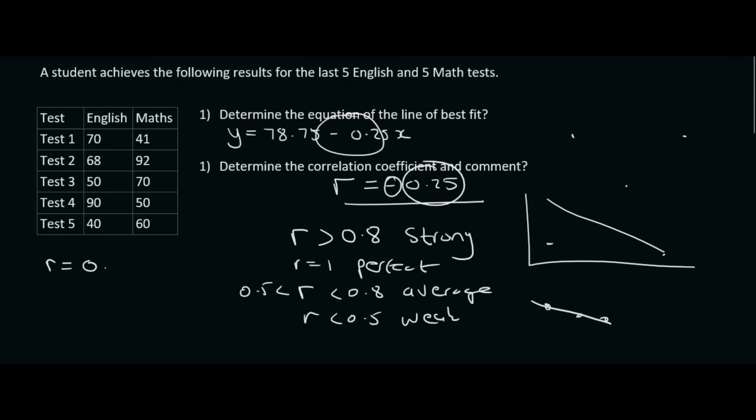Whereas if their r value was like 0.95, that would mean that there is a very strong relationship between their English marks and their maths marks. And so you could be fairly confident that if they do well in their English, they will do well in their maths. But in this scenario, it doesn't work.